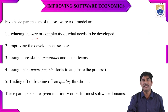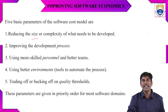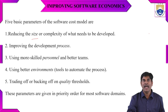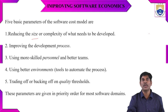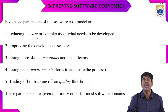The personnel parameter refers to more skilled and better teams. The environment parameter involves using techniques and tools for automated processes. For quality, we should not compromise — quality should be kept high while developing software or projects. We need to set a quality threshold and not back off on it. These are the five main parameters for software cost estimation.